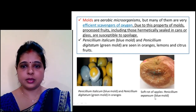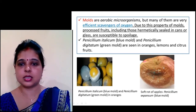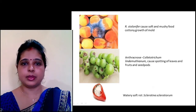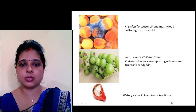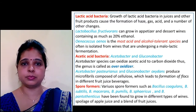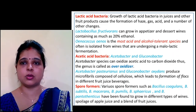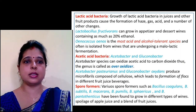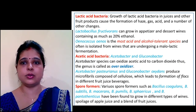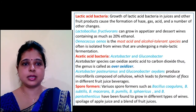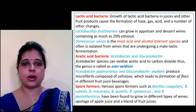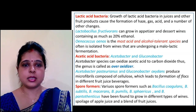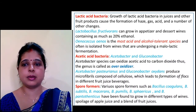Specific fungal spoilage includes soft rot of apple due to Penicillium expansum, Penicillium italicum and Penicillium digitatum affecting citrus, Aspergillus niger causing soft and mushy growth, anthracnose, and watery soft rot due to Sclerotinia sclerotiorum. Lactic acid bacteria causing fruit spoilage involve Lactobacillus; Oenococcus is the most acid- and alcohol-tolerant species. Among acetic acid bacteria, Acetobacter and Gluconobacter oxidize acetic acid to carbon dioxide. Spore-forming Bacillus coagulans and Bacillus subtilis also cause fruit spoilage.